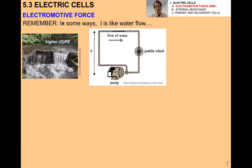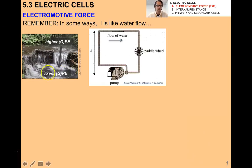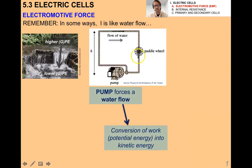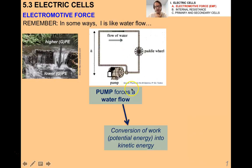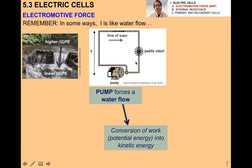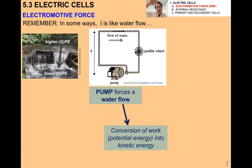Remember the analogy between electric current and water flow through a pipe. In some ways electric current is like water flow — water always goes from a region of higher gravitational potential energy to lower. In the case of a vertical pipe, if we wanted to make the water go up the pipe and flow in the indicated direction, we'd have to have a pump that does work against gravity to get it to the top, and then it would naturally fall down through a paddle wheel on the right. So the pump forces water to flow in a direction it would not naturally go — water naturally falls — and this is a conversion of work into kinetic energy.